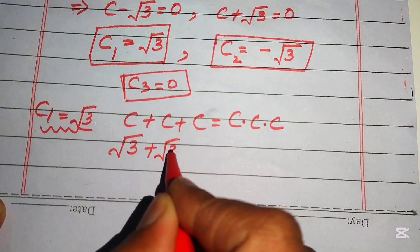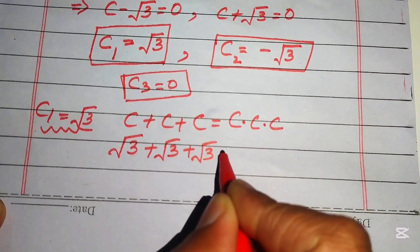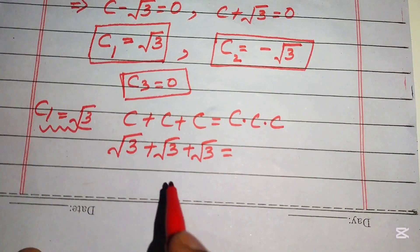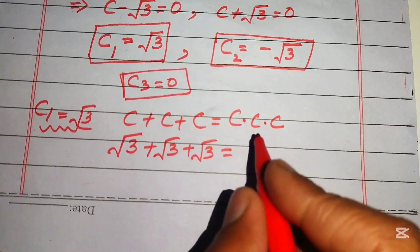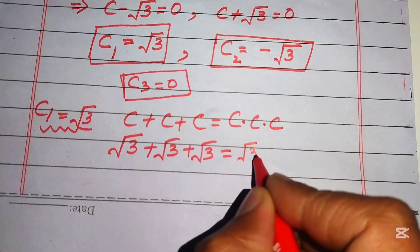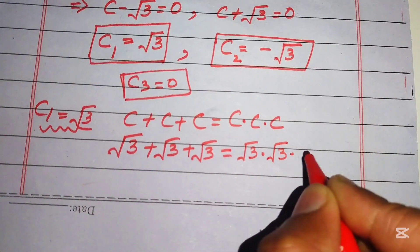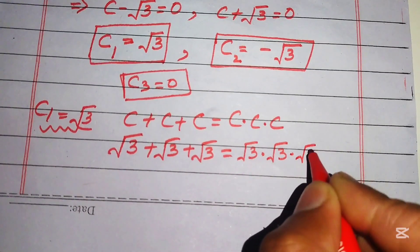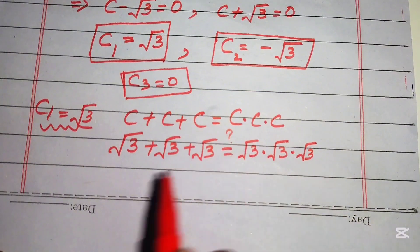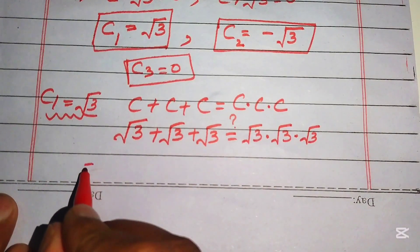On the right-hand side we get square root of three times square root of three times square root of three. We check whether both sides are equal.